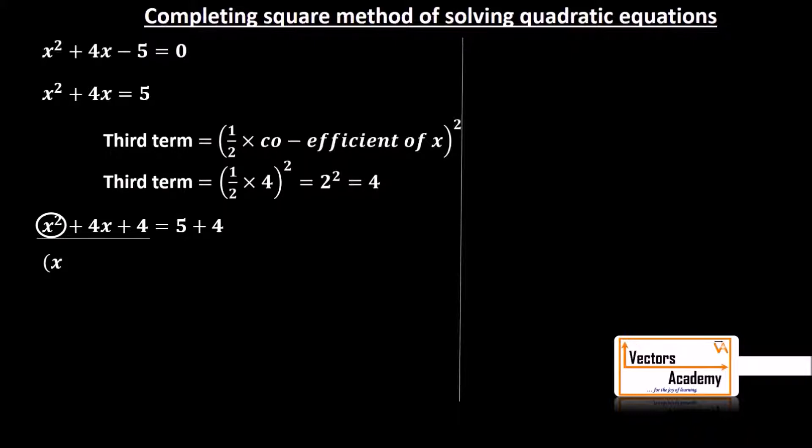Then we take the sign adjacent to it, i.e. plus, and then we take the square root of the last term, i.e. 4. Square root of 4 is 2. So the left hand side actually becomes (x + 2)².